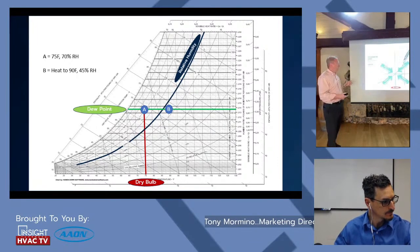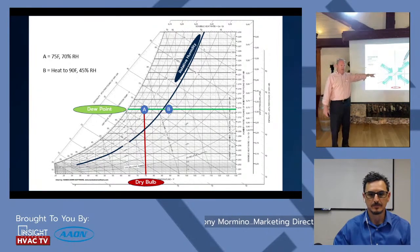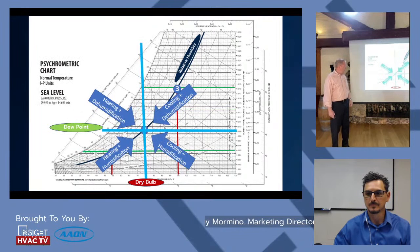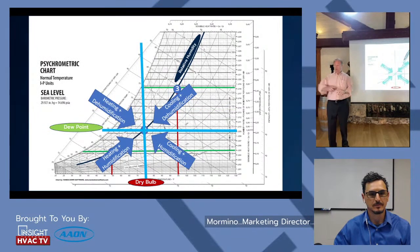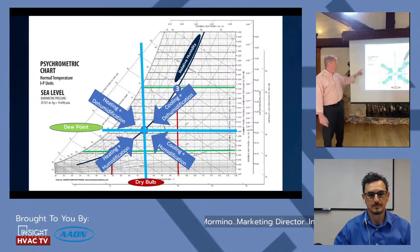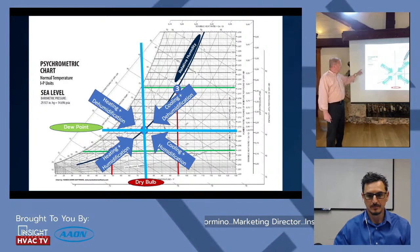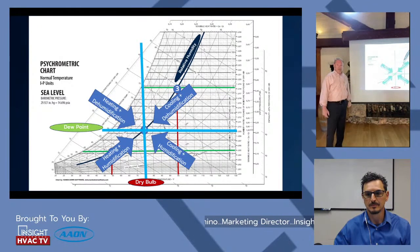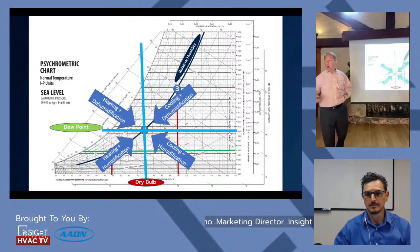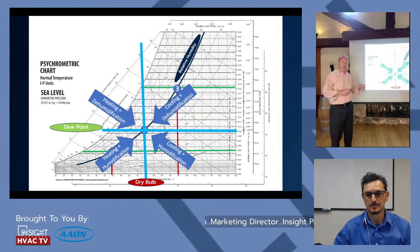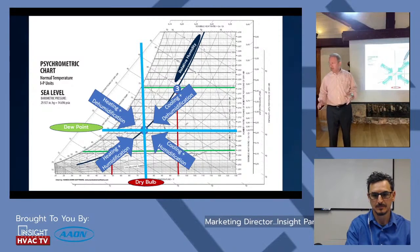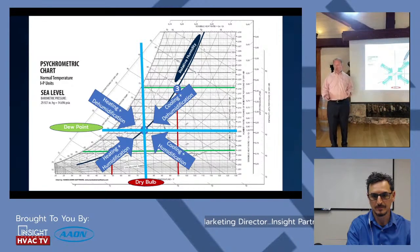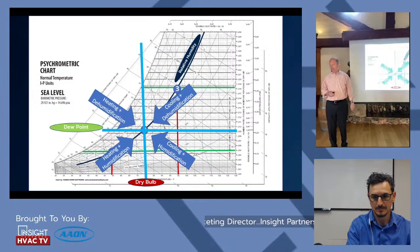Depending on where you are on the psychrometric chart, there's a central design point — typically 75°F at 50% RH. From wherever you are, it's a simple process: you're either cooling and dehumidifying, heating and dehumidifying, heating plus humidification, or cooling plus humidification. It really depends where you are on the chart to define the equipment needed. Once you know where you are and where you want to be, designing the equipment to get there becomes a straightforward project.